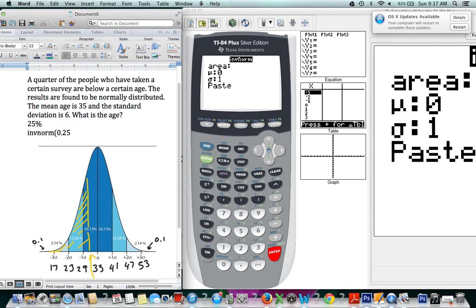So in this case our area under the curve, so what we have shaded here, is a quarter of the curve or 0.25. The next value that we'll enter is our mean, and in this question our mean is 35.